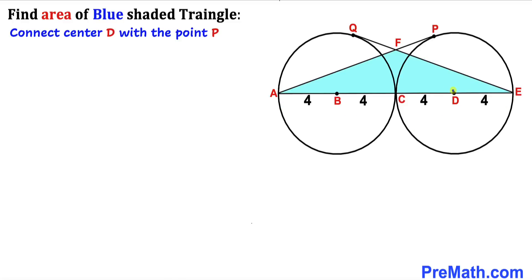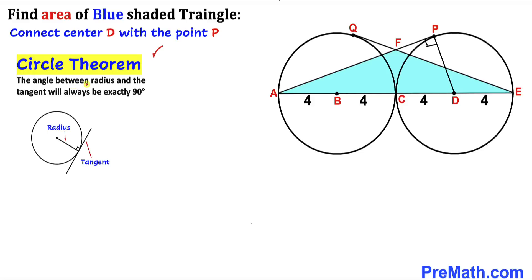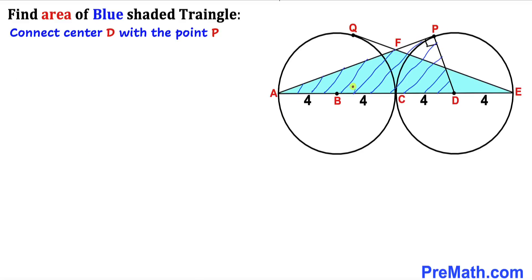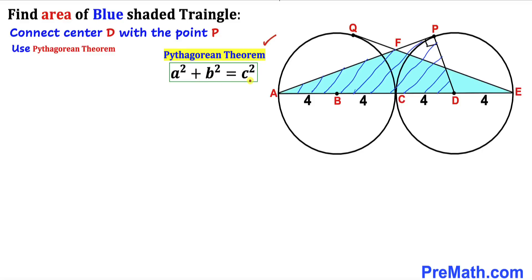Let's go ahead and connect center D with the point of tangency P, as you can see in the next diagram. Now let's recall the circle theorem: the angle between the radius and the tangent will always be 90 degrees. In our case, PD is the radius and AP is the tangent line, so angle APD is 90 degrees. Let's focus on triangle APD — this is a right triangle, so we are going to use the Pythagorean theorem.